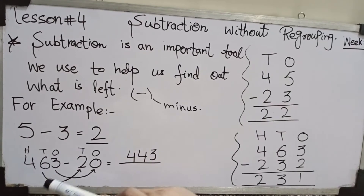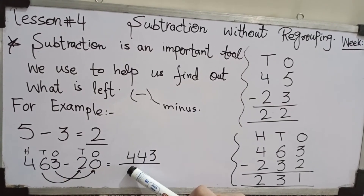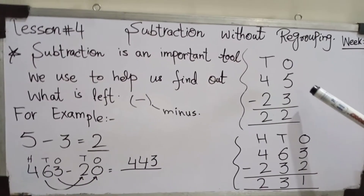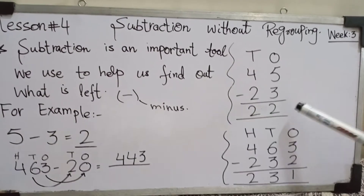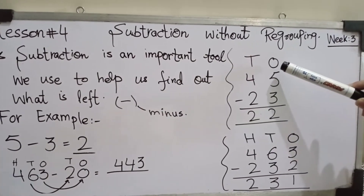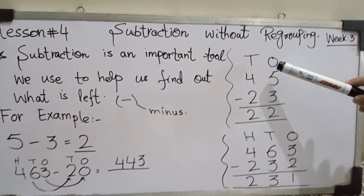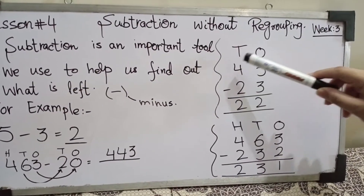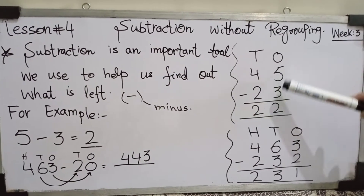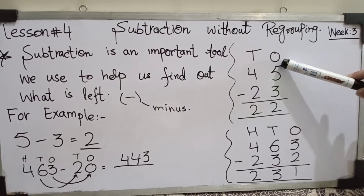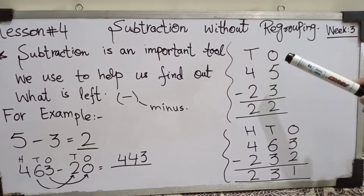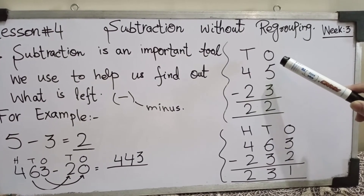Now we have another way — it's a vertical form۔ یعنی آپ کے پاس place value given ہوتی ہے — آپ numbers کو digits کو place value پہ write کر دیو۔